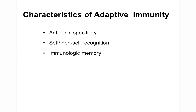The third characteristic is immunological memory. Memory cells are produced in the adaptive immune response, while no memory is generated in the innate immune response. The fourth characteristic is diversity — for every different type of antigen that enters the body, the body has the ability to produce specific antibodies. There are thousands of naturally occurring antigens, and antibodies against all of them can be produced in a single individual.